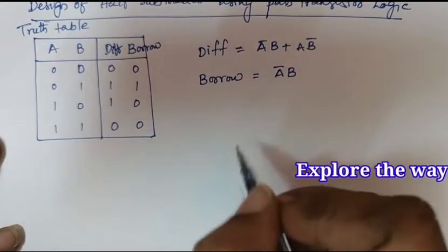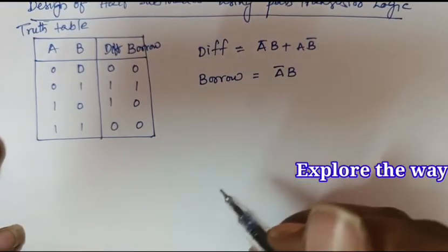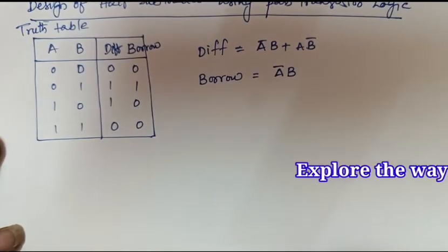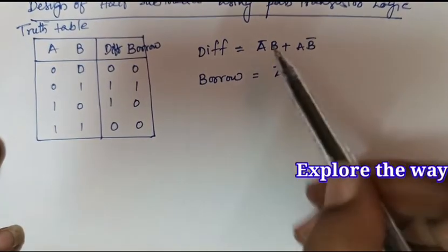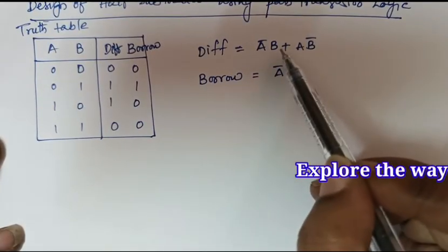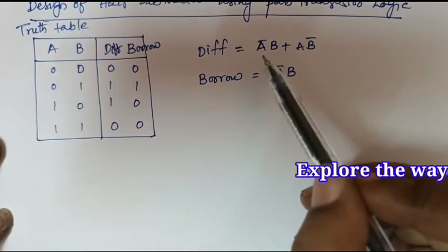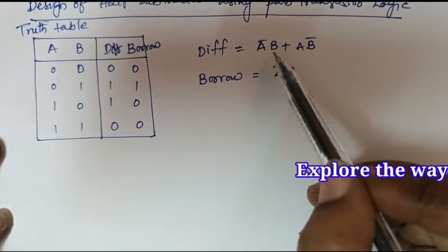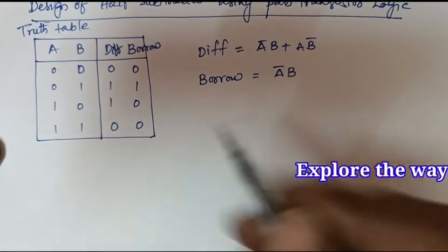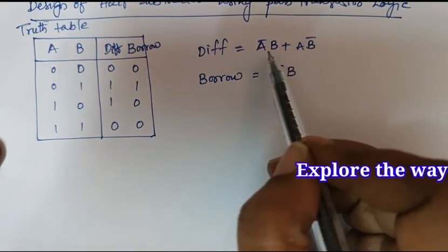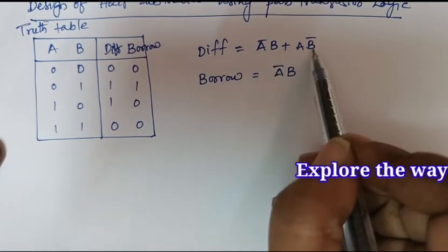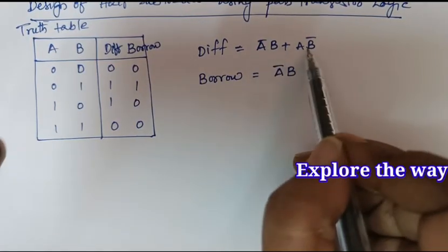Now we will implement half subtractor using pass transistors. So here we are using NMOS as the pass transistor. In this expression we have two variables A and B. Let us consider one of the variables as the control input and the other input as the data input. To generate every product term one pass transistor is required. So totally two pass transistors, those two must be connected in parallel.